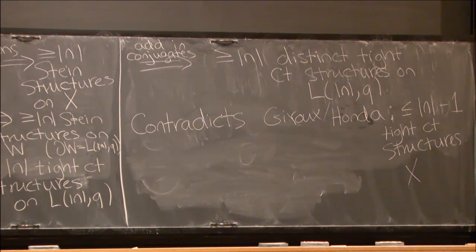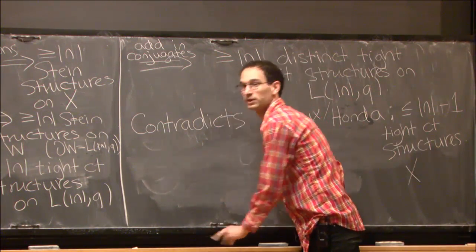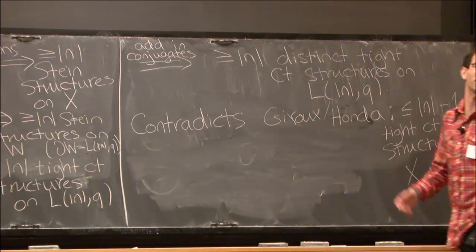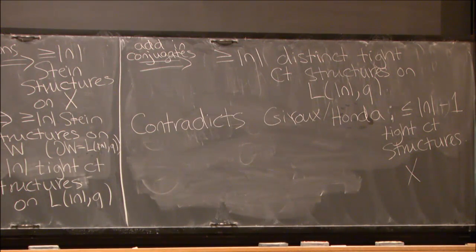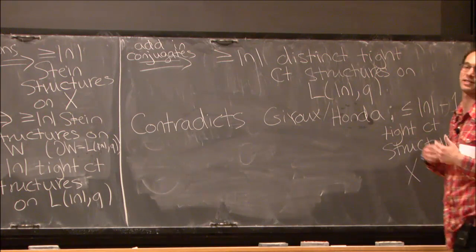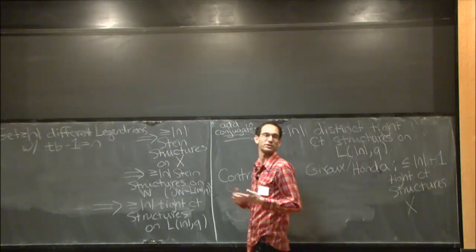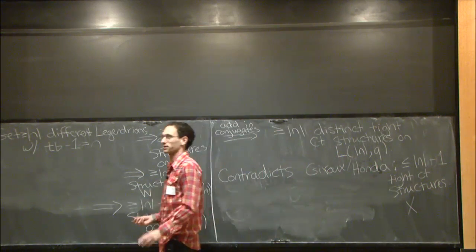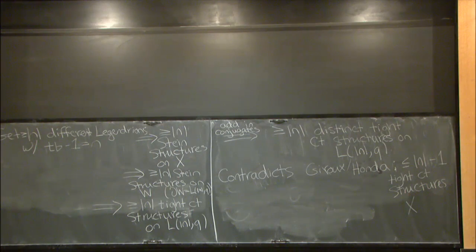One could ask whether you can do this for other exceptional surgeries—can you bring in Stein topology and contact topology to study toroidal surgeries or other exceptional Dehn surgeries? That's an open direction.